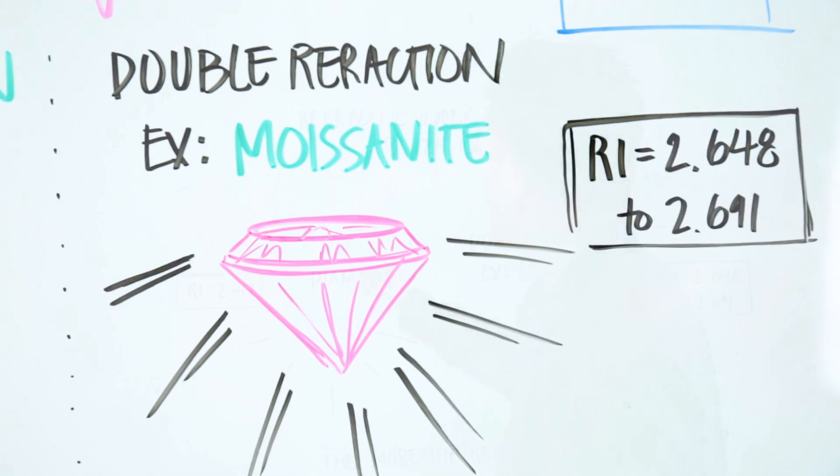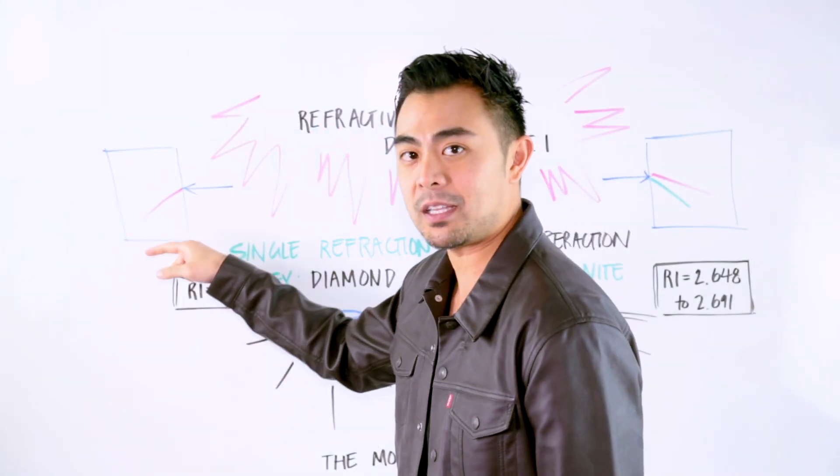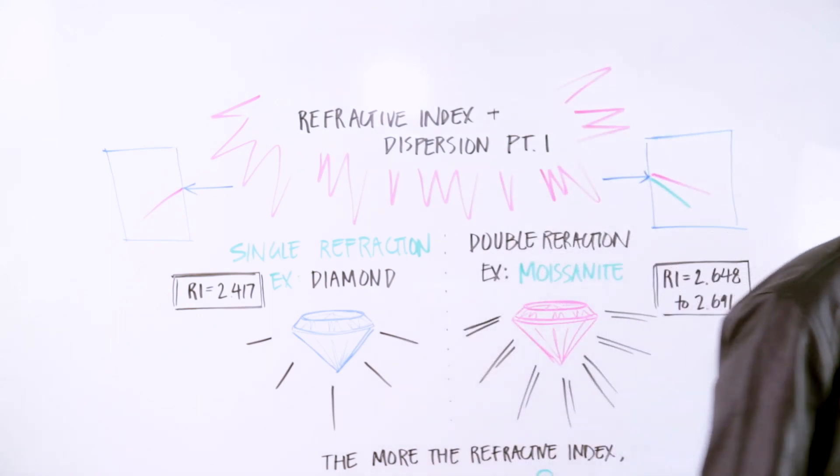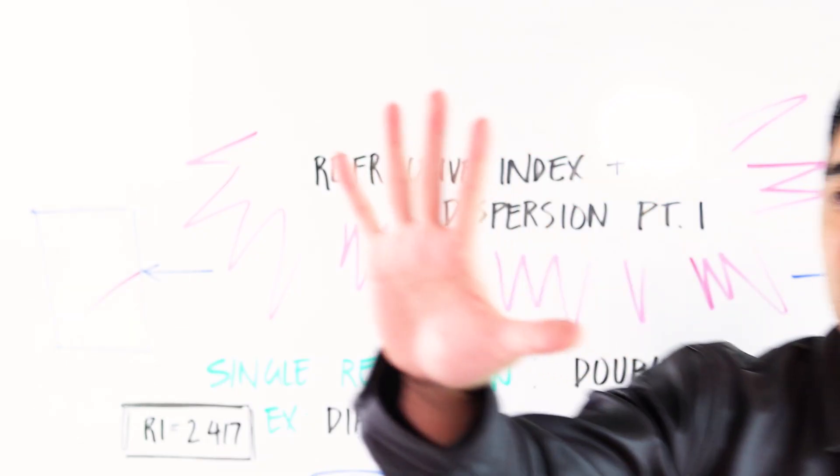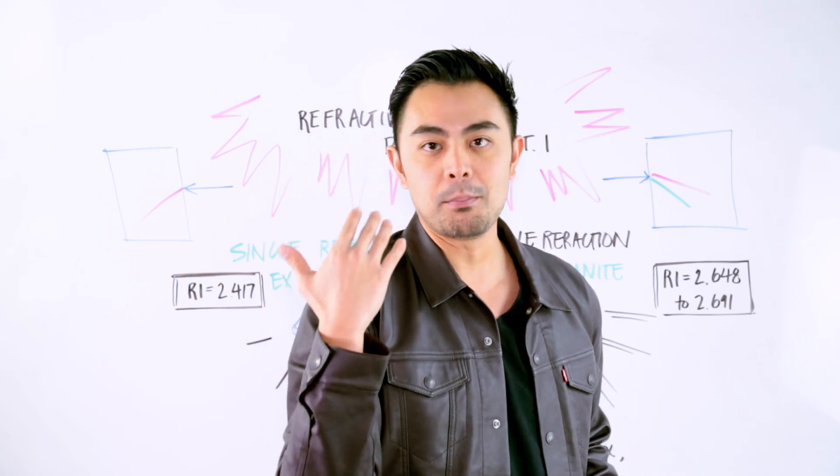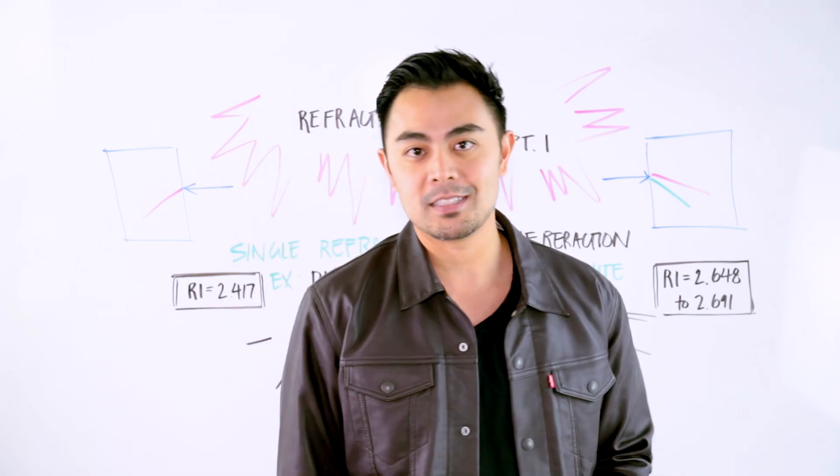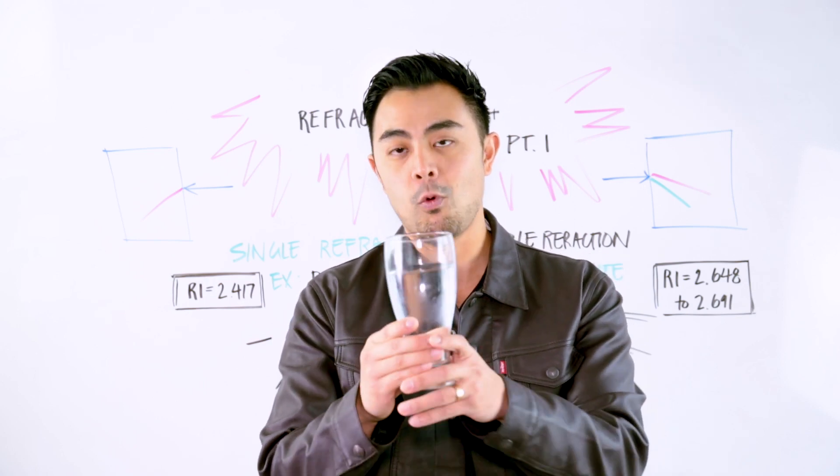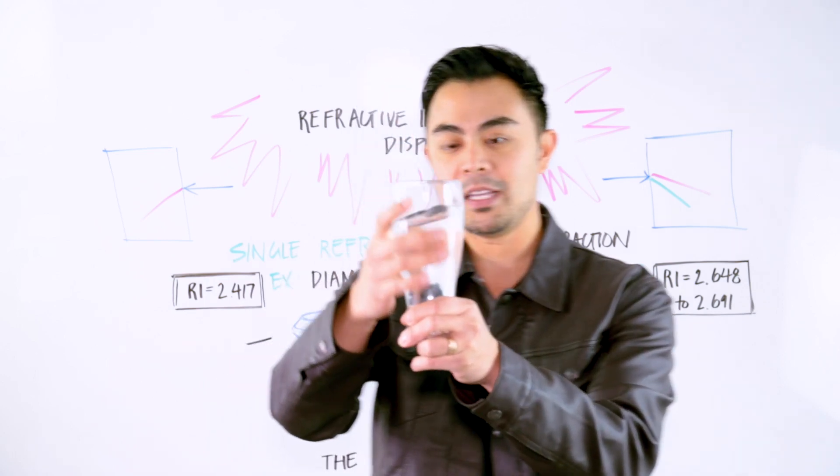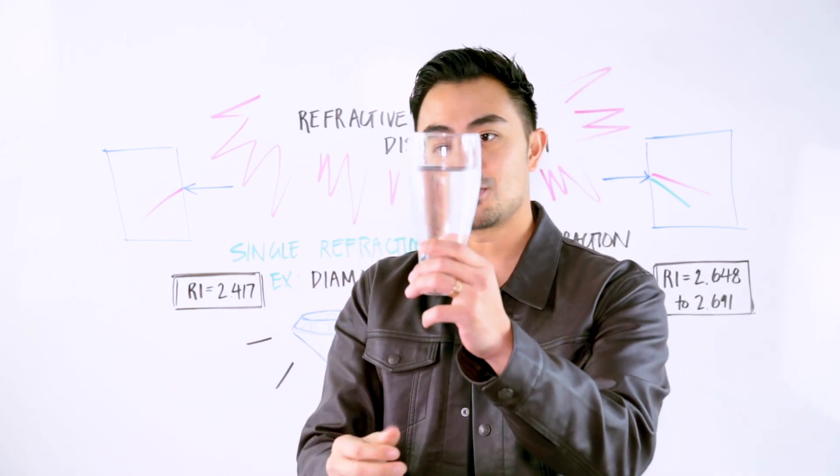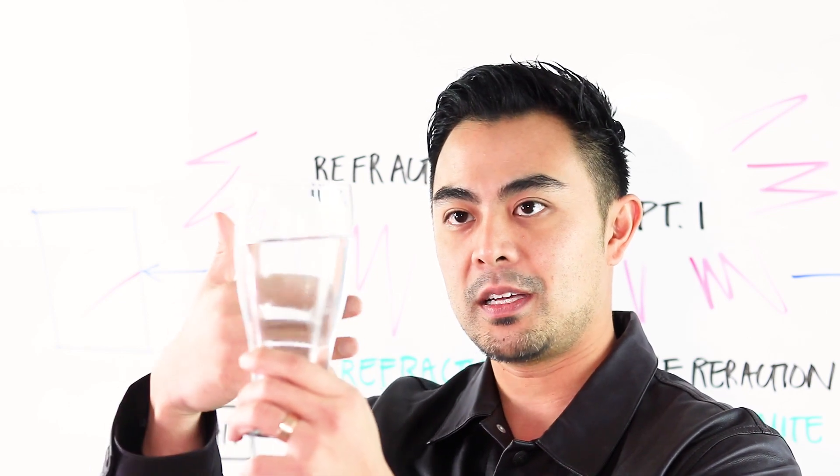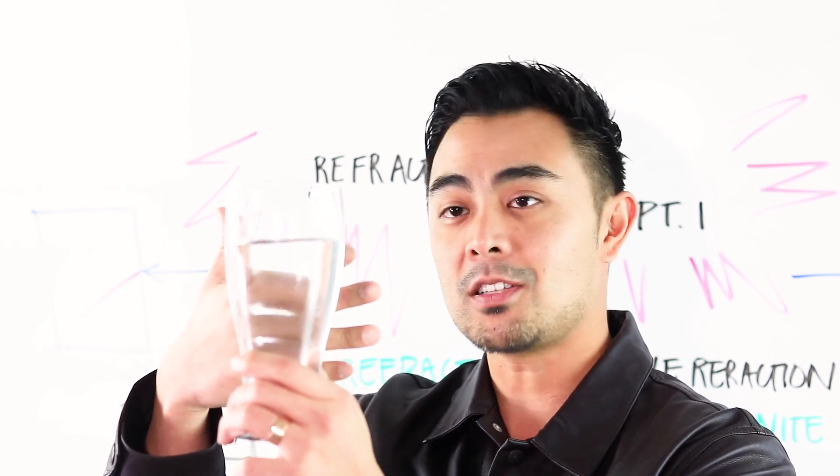And all that basically means is that when light enters into a medium, so let's just say right now, I'm going to actually show you an example. If you take a look at my hands, this is what you'll see, because you're seeing it through air. This is the medium of air. But if I was to hold up a glass of water, it will not only enter through the medium which is glass, but also water. And if you see right my hands in between, you won't be able to see my fingers completely because the light is bent.